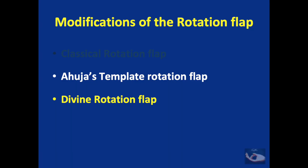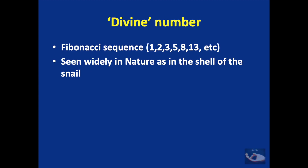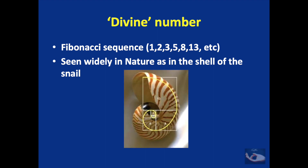The divine rotation flap is based on the divine number — the Fibonacci sequence — where each number equals the sum of the preceding two: for instance, 1+2=3, 2+3=5, 5+8=13, and so on. When this ratio is used, it generates a spiral seen widely in nature, such as in the shell of a snail.